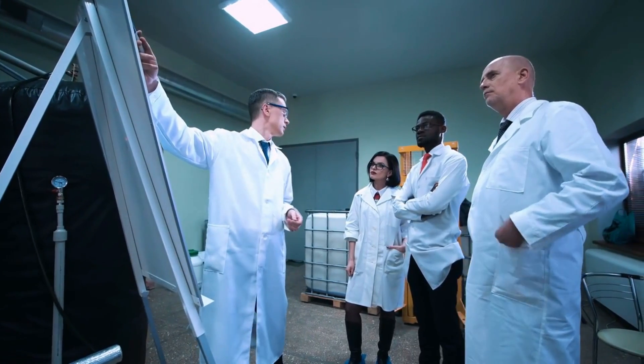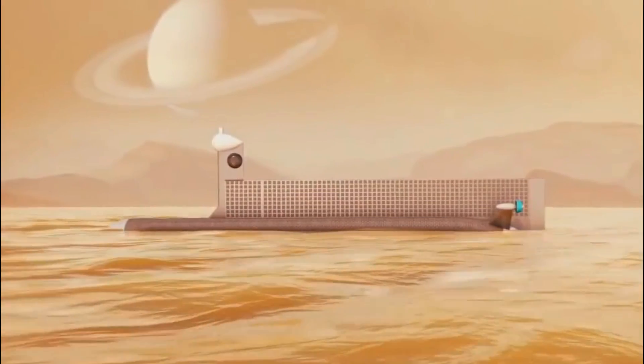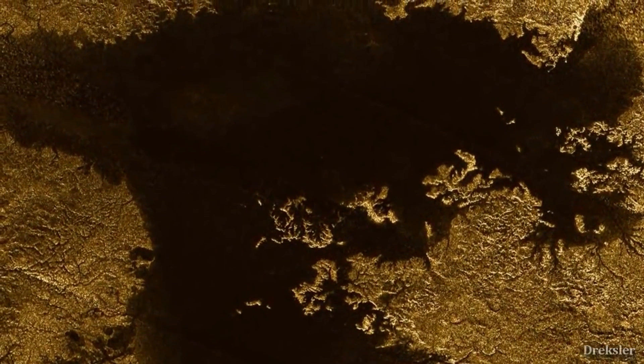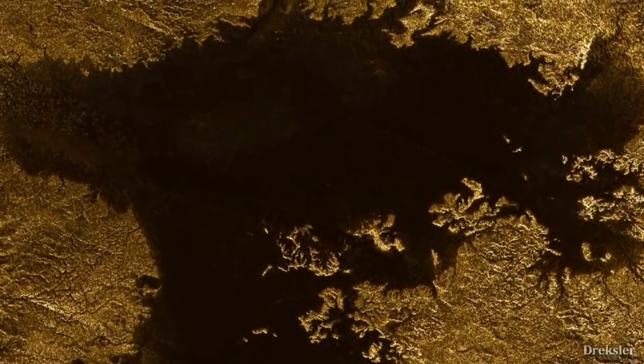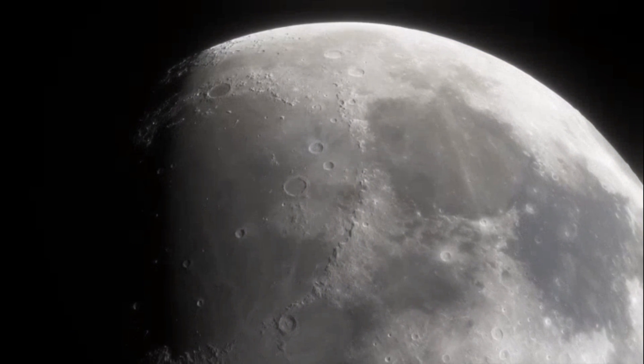Scientists are still debating the composition of Titan's lakes and the materials that make up their shores. Kraken Mare and Ligeia Mare are the only bodies of water in the solar system apart from Earth where liquid has been found on the surface. The main mystery that remains unanswered is whether this moon can sustain life.